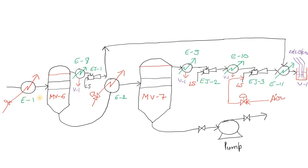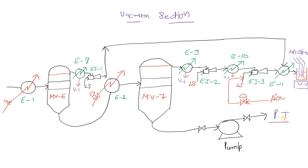To understand how we do the pneumatic test, I have drawn a diagram of the vacuum section. This includes an evaporator, a separator, a condenser E8, and an ejector. The same arrangement repeats — evaporator, separator, condenser, ejector — forming the condenser and ejector system. At the end there is our tank V1 and a pump that goes to the prilling tower. This is the vacuum section of a urea plant.